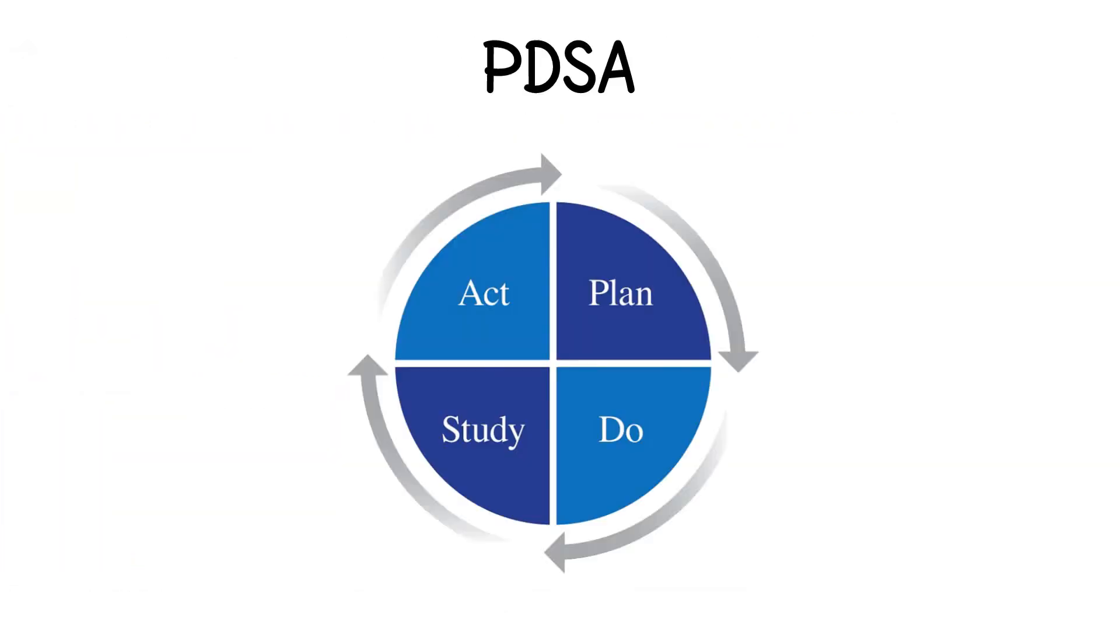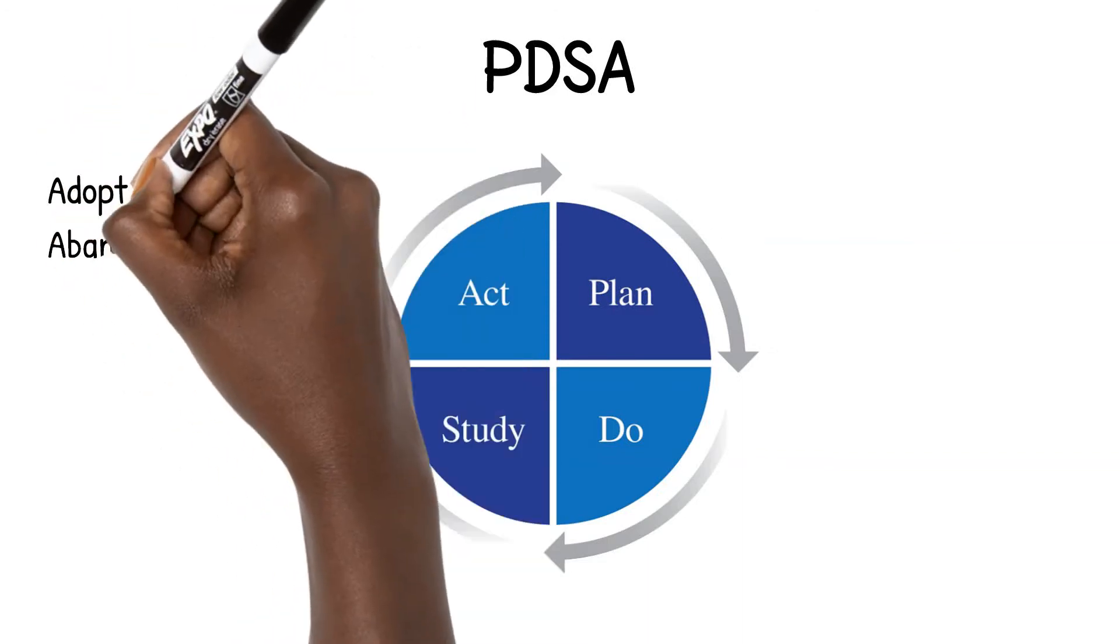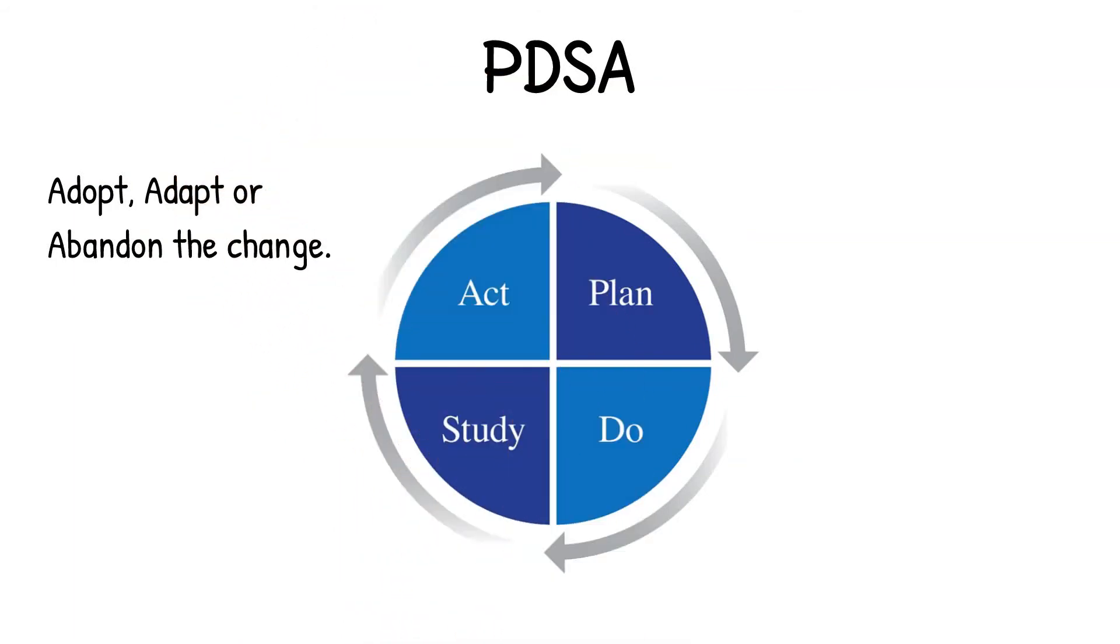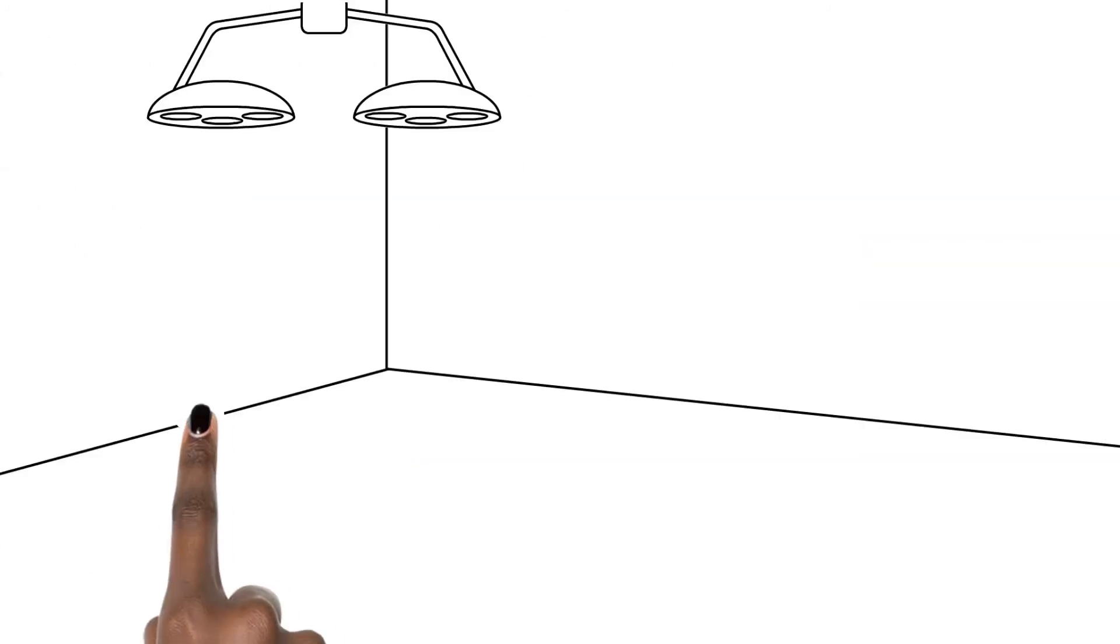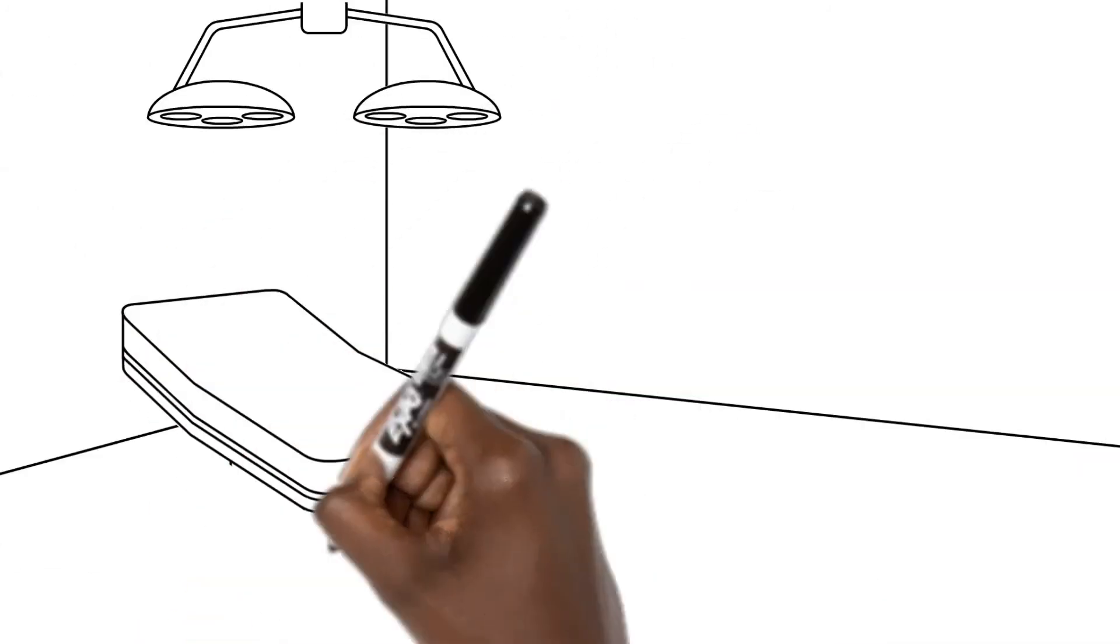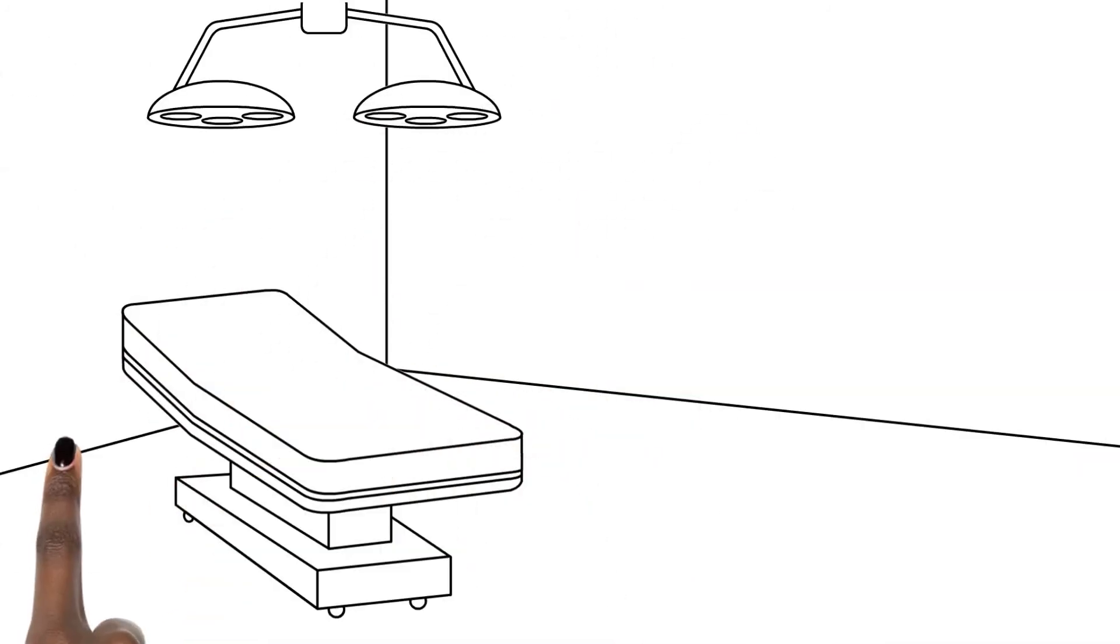In the last step, you will want to act on what you have learned by keeping the intervention in place, tweaking the intervention and running through the PDSA cycle again, or abandoning the intervention completely and coming up with a new idea to evaluate. In the final phase of the project, the research team continued to look for opportunities to further reduce the infection rate.